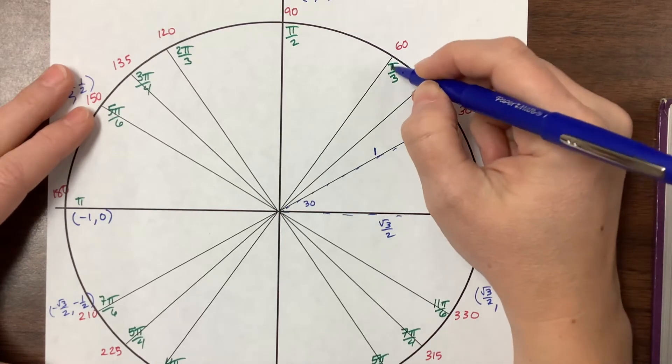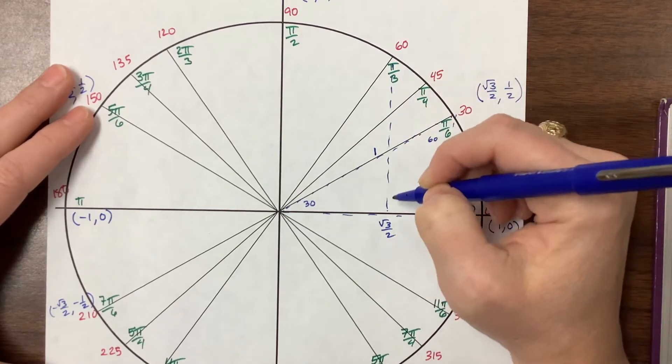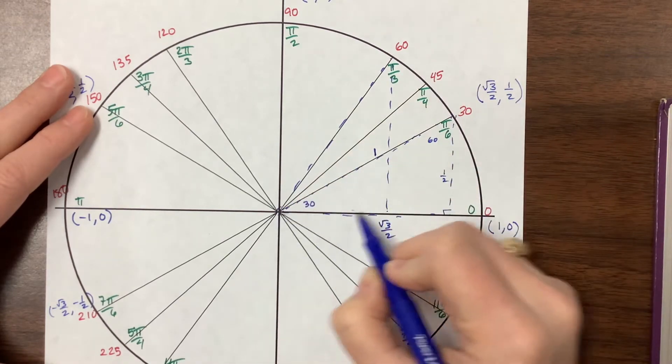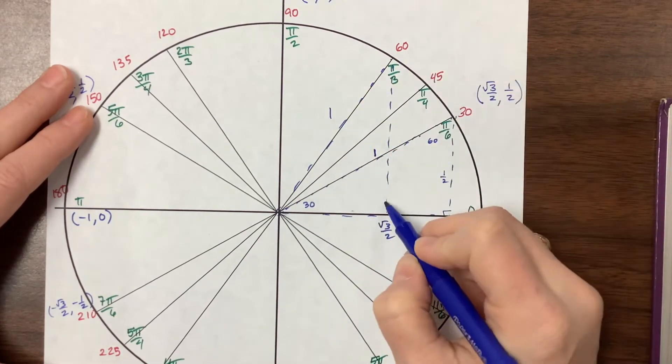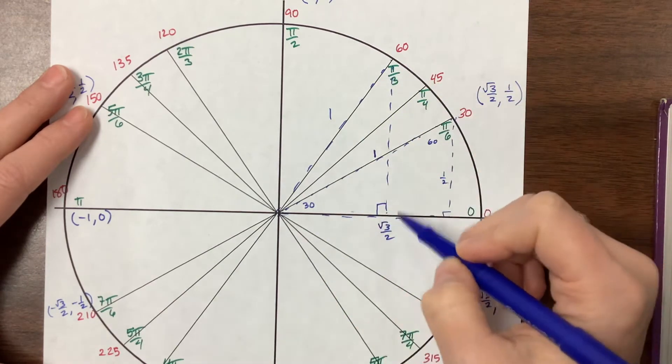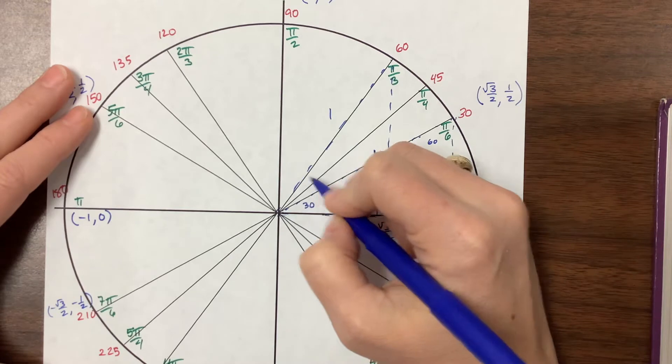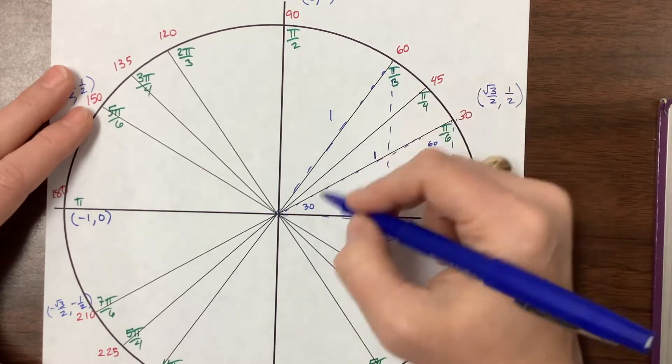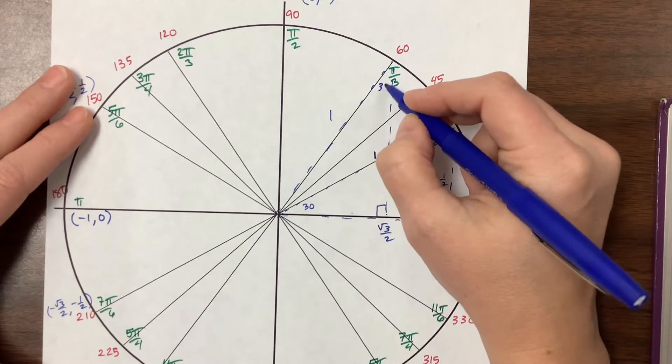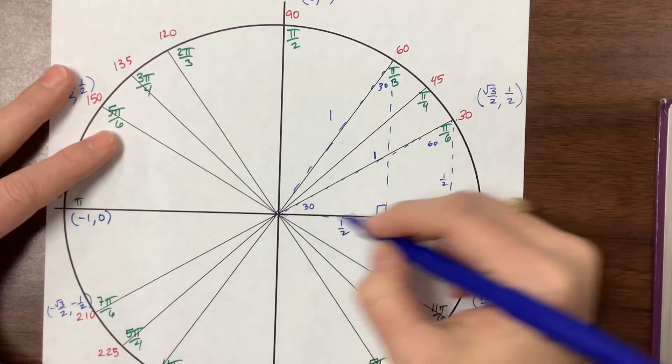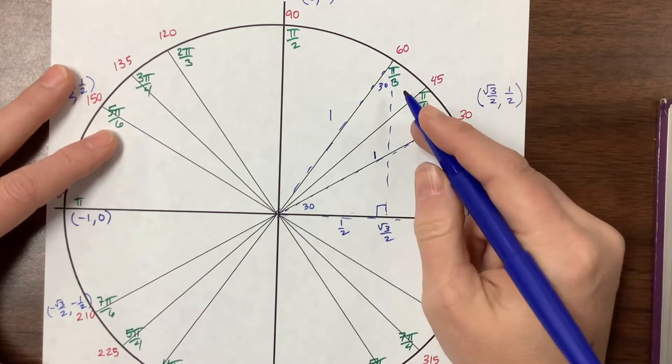Here's another triangle. This one right here is also a 30-60-90 triangle, but the 60 degree angle is now this entire angle. Opposite the 90 is 1, so opposite the 30 is 1/2. So now it has the x value of 1/2 and the y value of root 3 over 2.